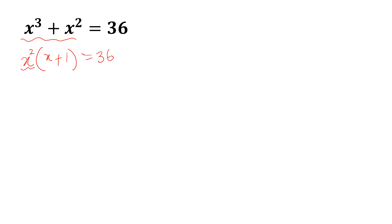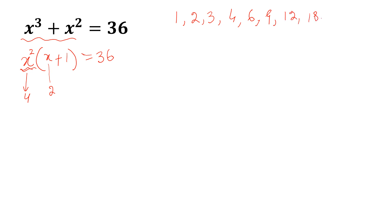Now this number is a perfect square. We try different numbers, but look at the factors of 36: 1, 2, 3, 4, 6, 9, 12, 18, and 36. Look at these factors 4 and 9. These two factors are perfect squares.